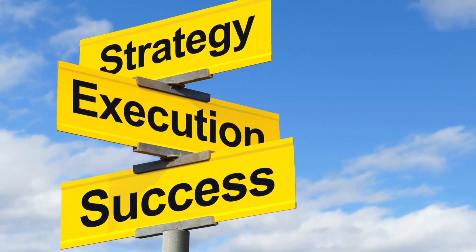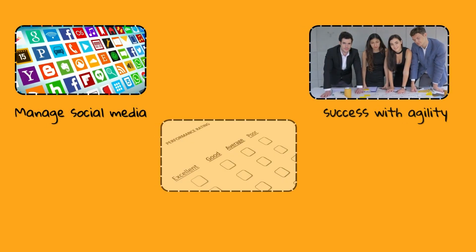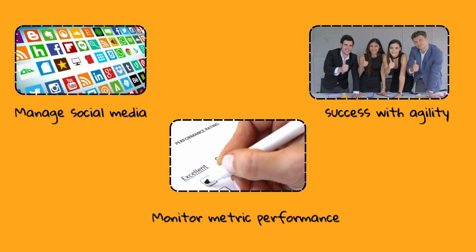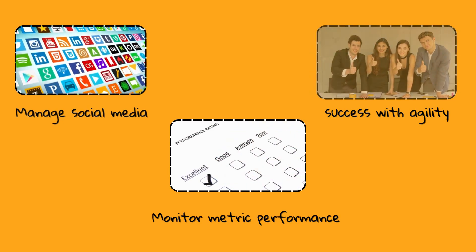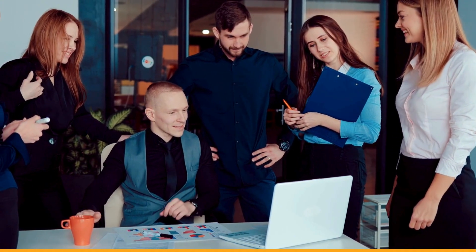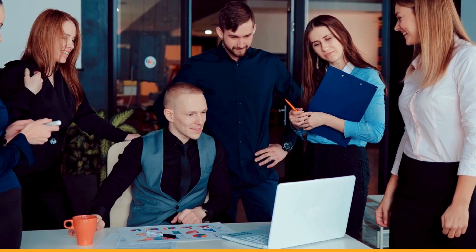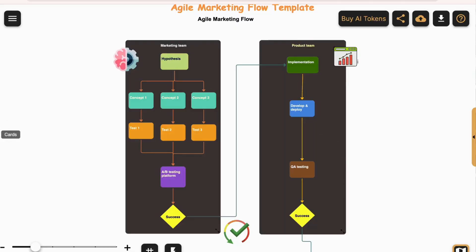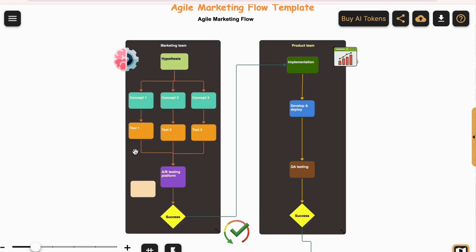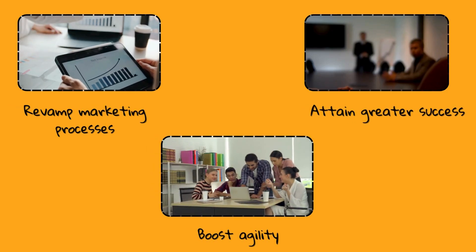Whether it's launching a new campaign, managing social media, or tracking performance metrics, this template empowers teams to be agile, nimble, and adaptable. With its intuitive process design and customizable features, the Agile Marketing Flow Template fosters collaboration, encourages agility, and accelerates progress within marketing and product teams.